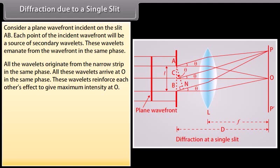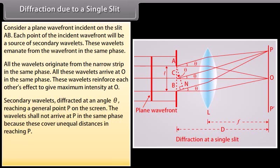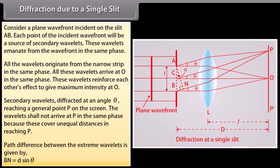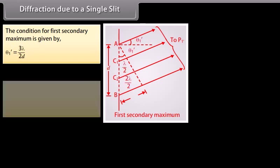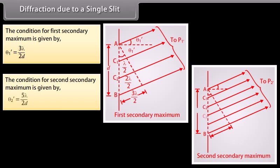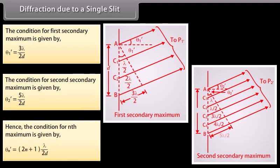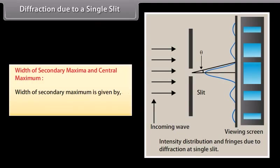Consider the formation of secondary minima and secondary maxima. Secondary wavelets diffracted at angle theta reach a general point P on the screen. The wavelets do not arrive at P in the same phase because they cover unequal distances in reaching P. The path difference between the extreme wavelets is given by BN = D sin θ. The condition for the first secondary maximum is at angle θ = 3λ/2D, and for the second secondary maximum at θ = 5λ/2D. Hence, the condition for the nth maximum is at angle θ = (2n+1)λ/2D. The width of the secondary maximum is also defined accordingly.